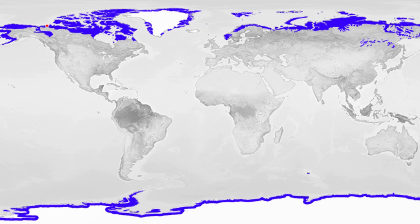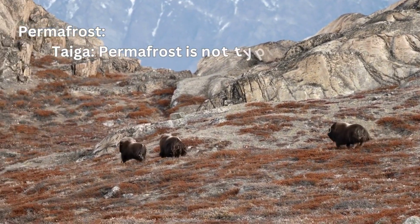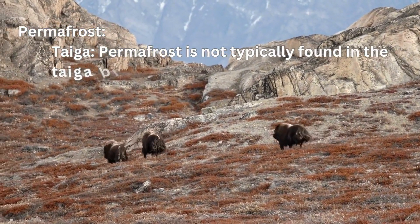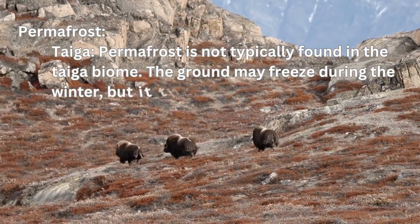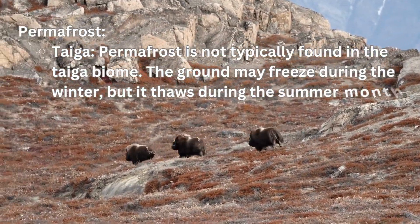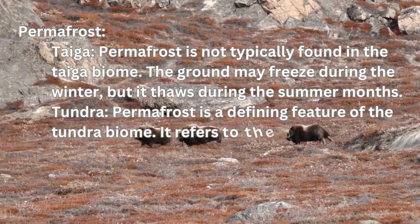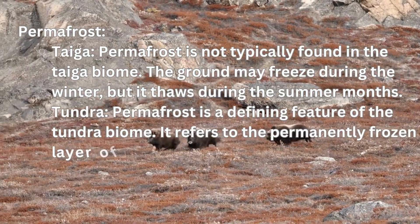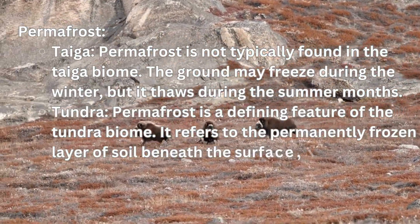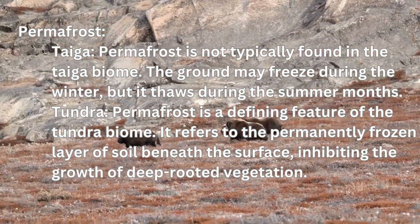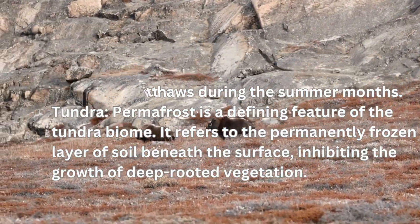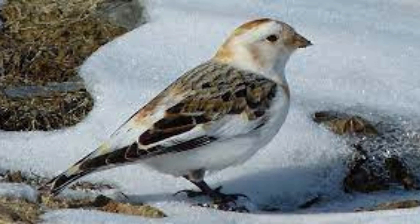Permafrost comparison: Permafrost is not typically found in the taiga biome. The ground may freeze during winter but thaws during the summer months. In the tundra, permafrost is a defining feature of the biome — it refers to the permanently frozen layer of soil beneath the surface, inhibiting the growth of deep-rooted vegetation.